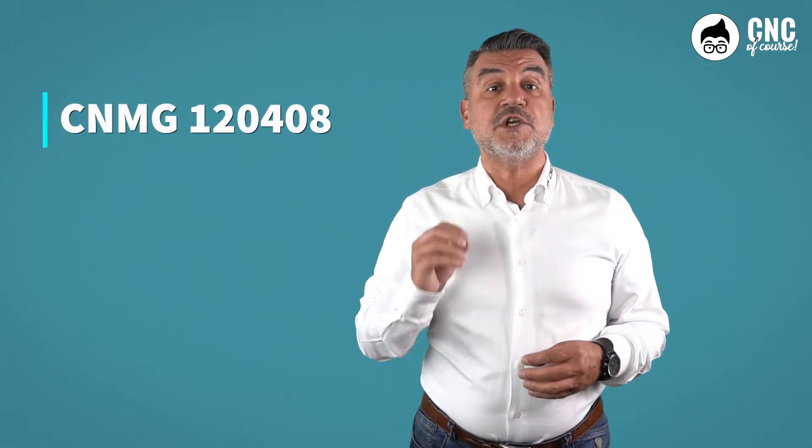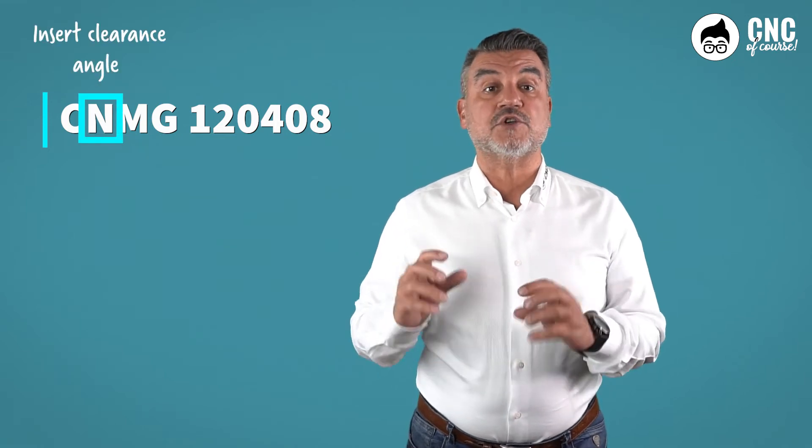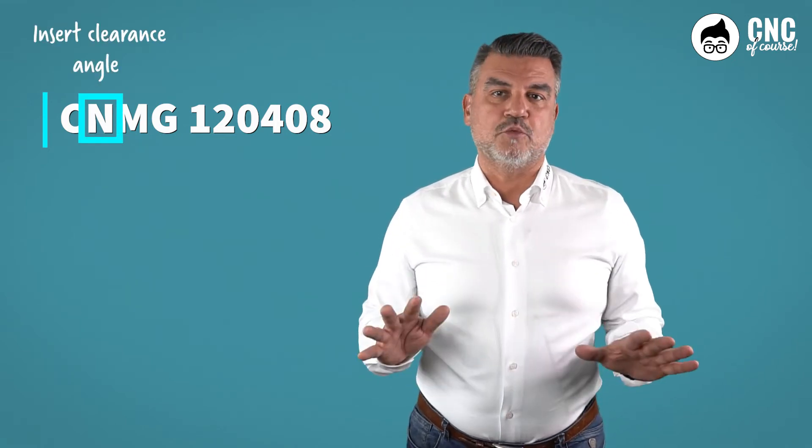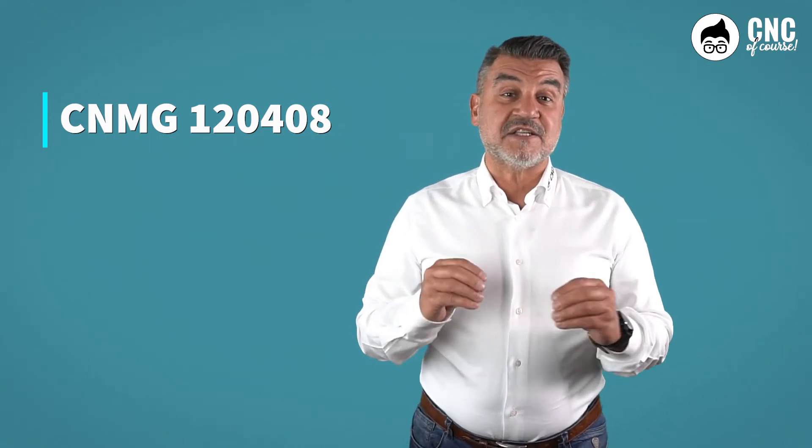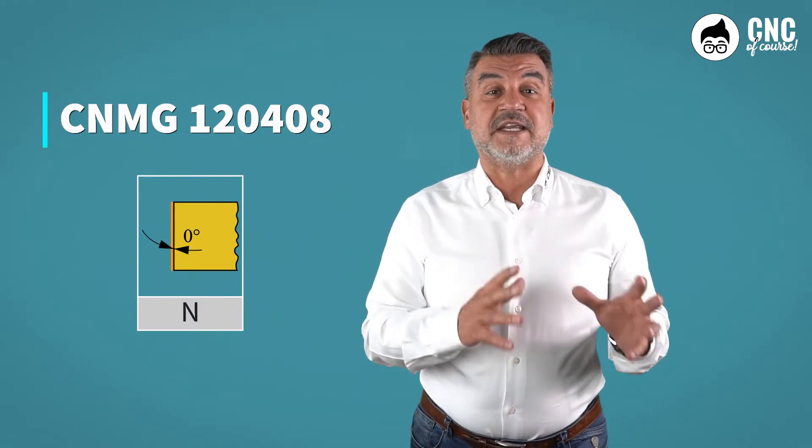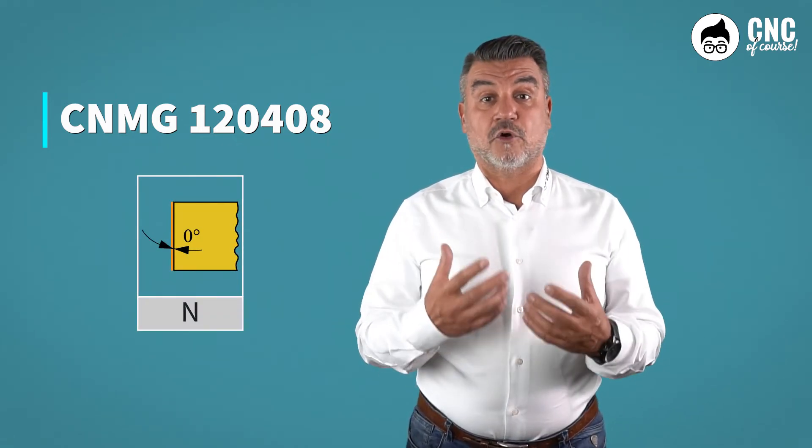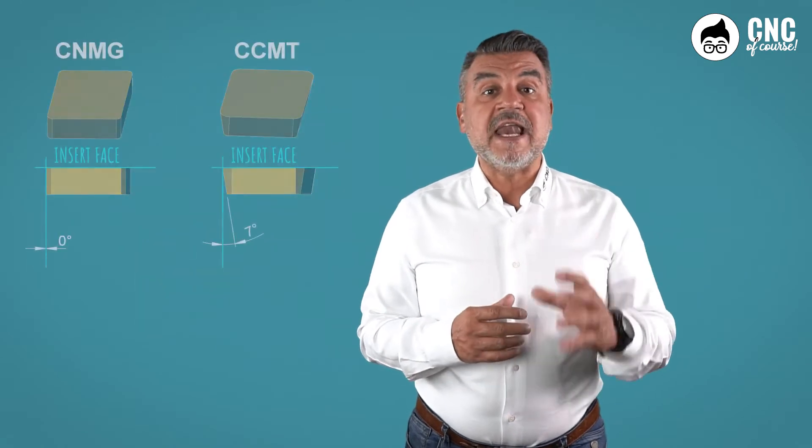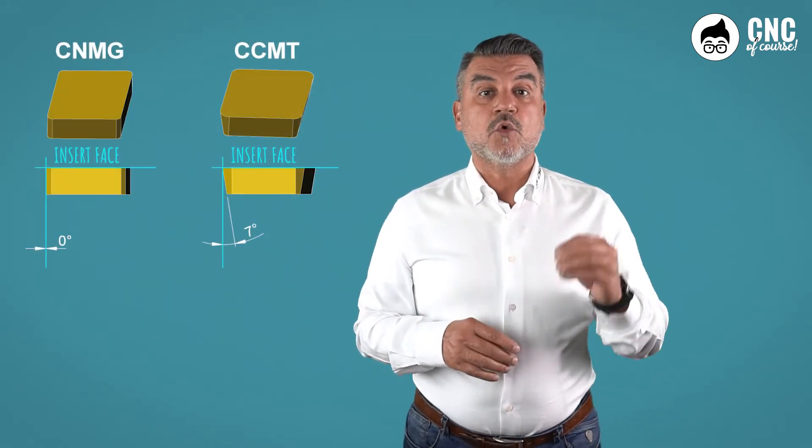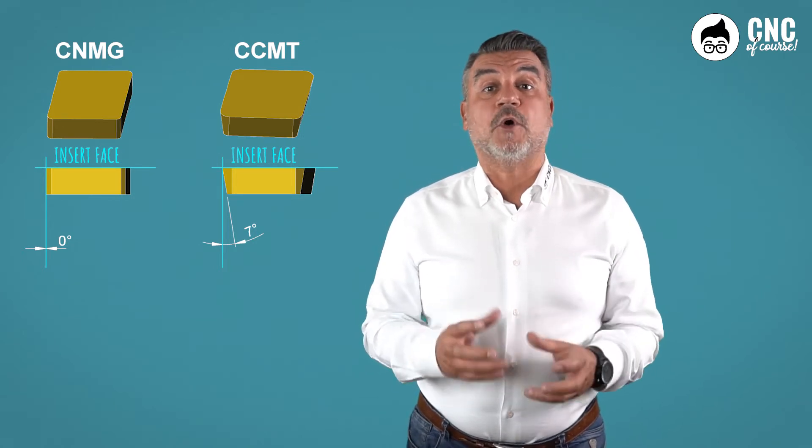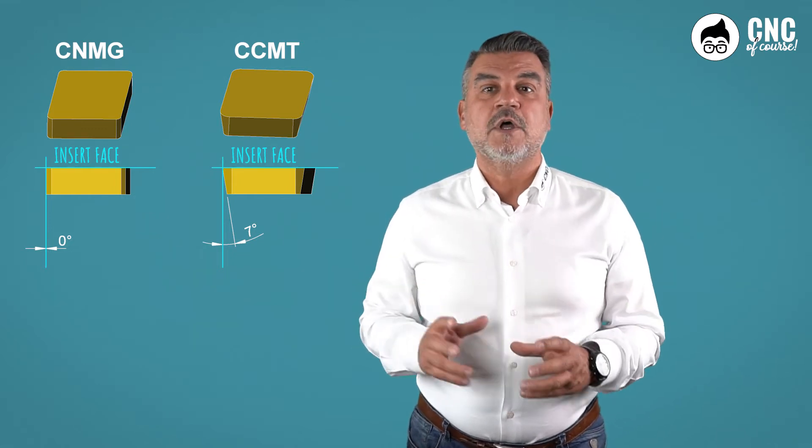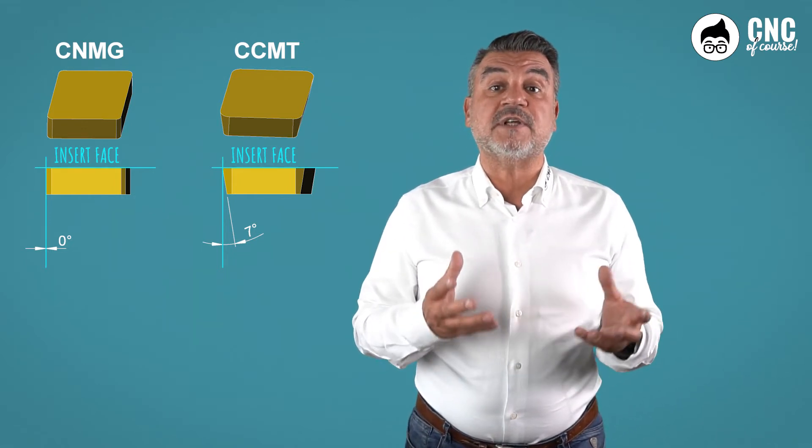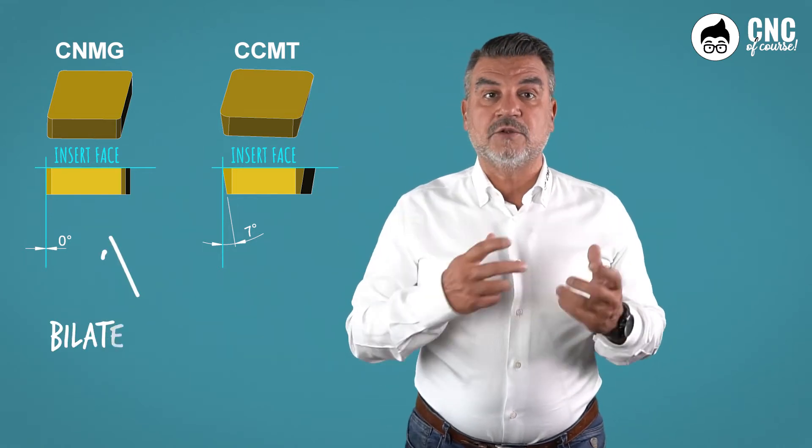Let's take our CNMG 120408 insert and analyze the meaning of the second letter, which in this case is the letter N. Let's make one thing clear right away: N does not stand for negative. This is a myth that you sometimes hear in the workshop. N means that the insert clearance angle is zero. This is the angle formed between the side of the insert and the perpendicular to the face of the insert. So, an insert clearance angle of zero corresponds to 90 degrees between the face and the side, which allows us to say that the angle of zero makes us have an insert that could be used on both sides, in which case it is called a bilateral insert.